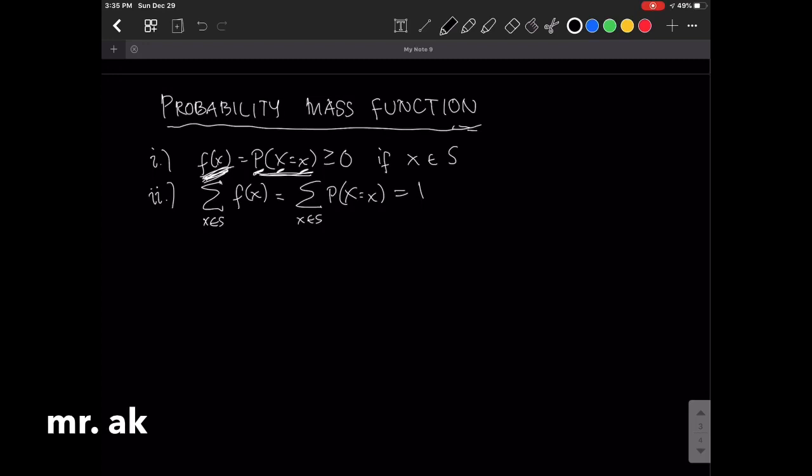And since it is a probability distribution, the individual probabilities have to be greater than or equal to 0. That's the first condition for being a probability distribution. And the second condition is that if you add all of the probabilities, the answer should be equal to 1.